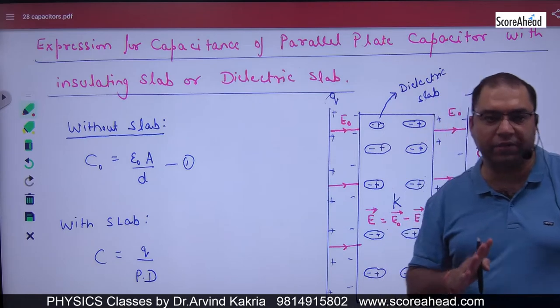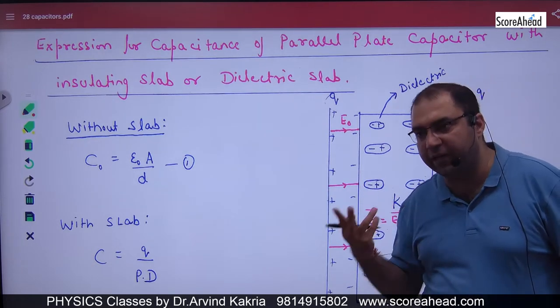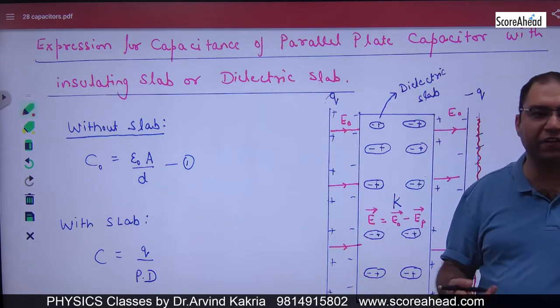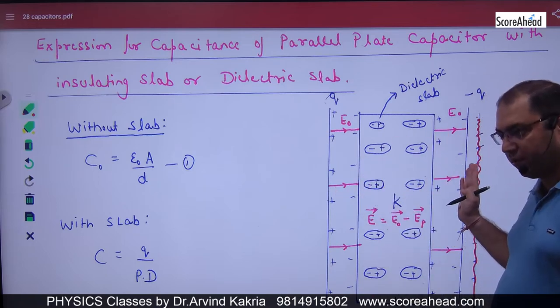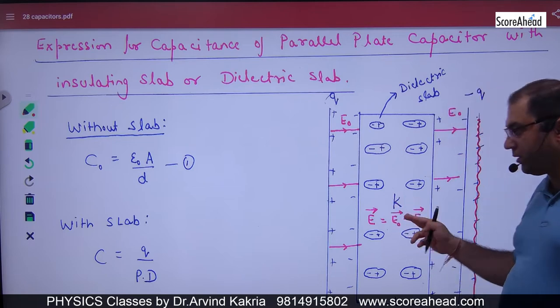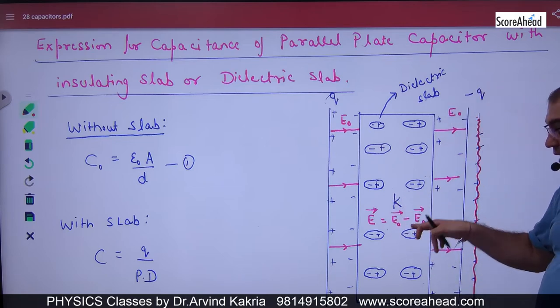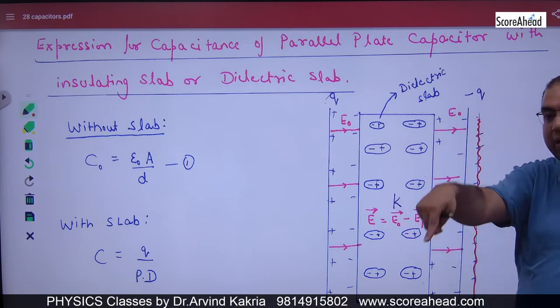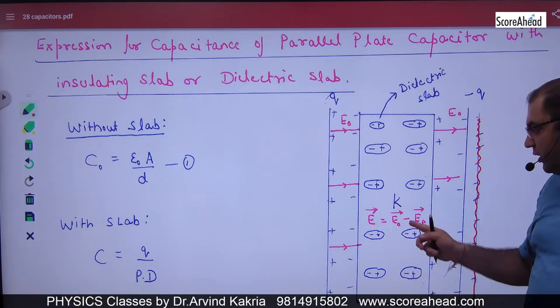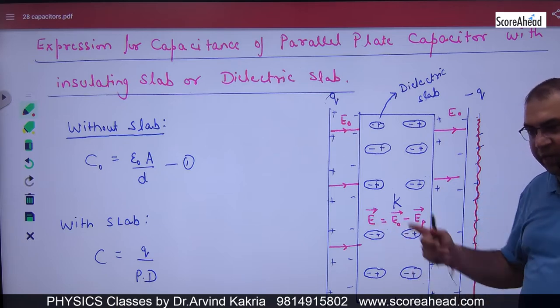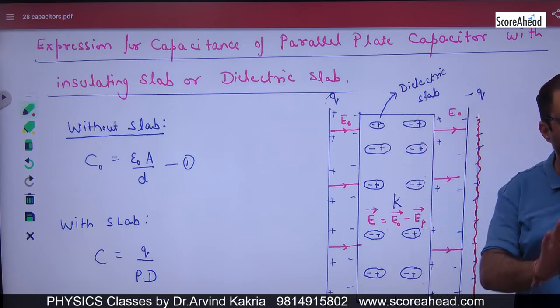So in this, I applied the electric field, E0, which was from the plates of the capacitor. In this, the dielectric constant is K. Inside, the net electric field developed is E, which equals E0 minus EP. This is clear.